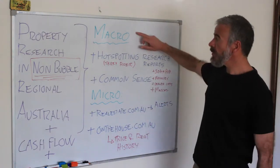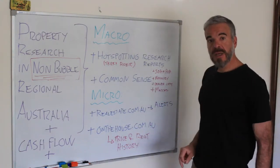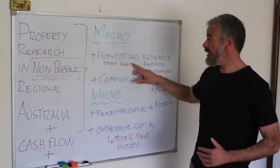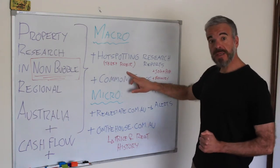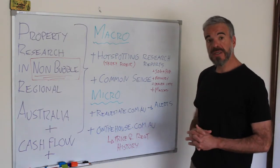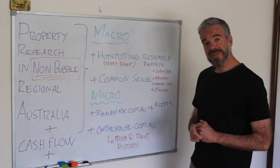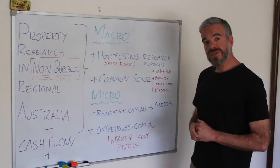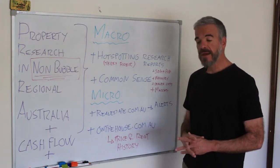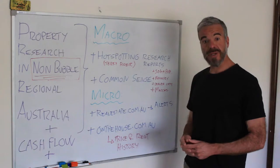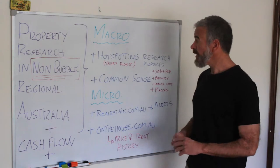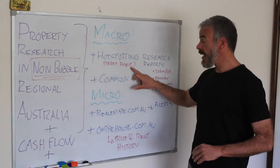On the macro economic side of things, I personally pay for the HotSpotting reports by Terry Ryder. You can find them online and they're very useful. They basically break down regional centers, areas, and suburbs so you can have a deeper dive into what's going on in each individual area before you actually jump in the car and go look at properties.